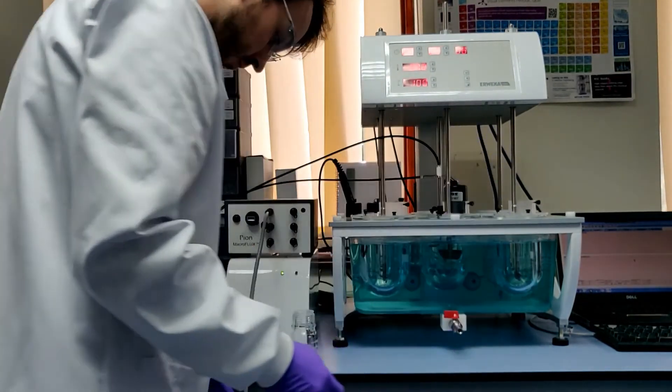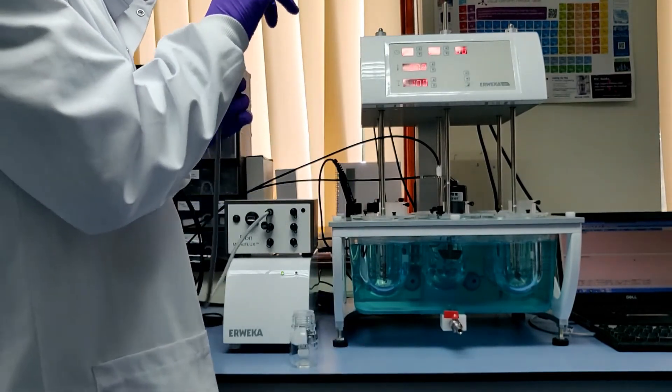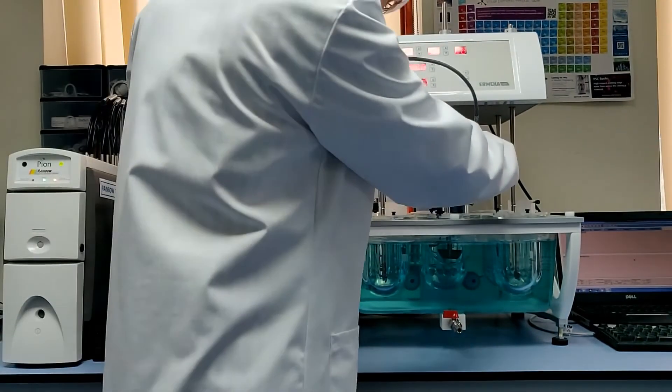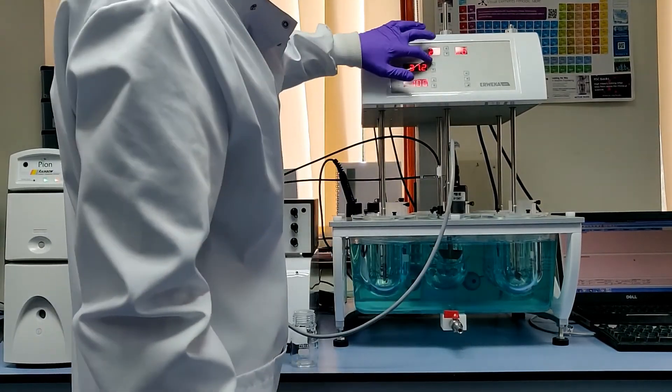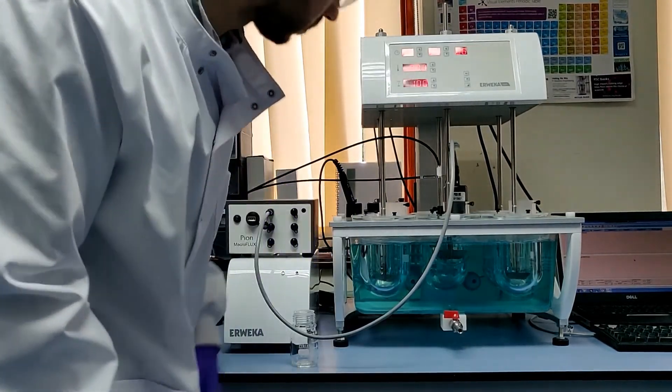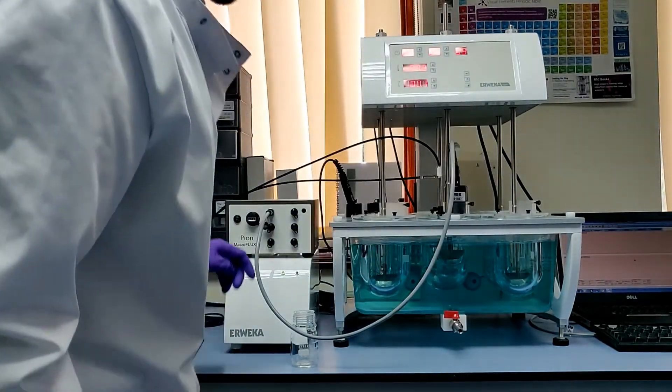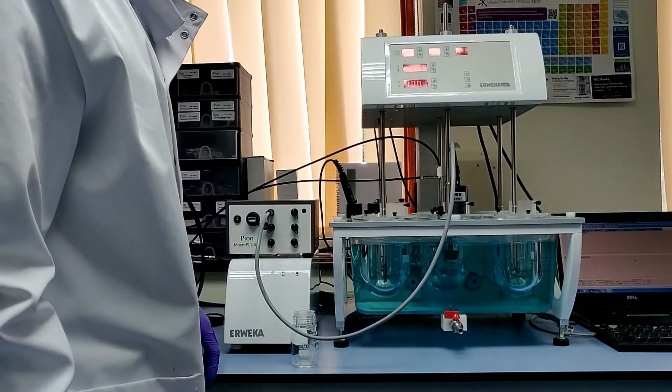Finally, the stirrer unit is connected to the MacroFlux stirring controller. Once all connected up, stirring can be initiated in the dissolution vessel and in the acceptor chamber. The stirring of each chamber is controlled independently and can be set to individual speeds.